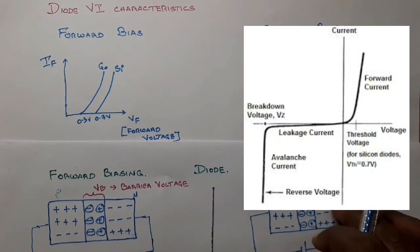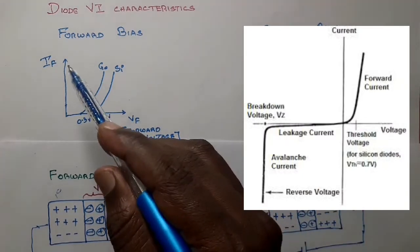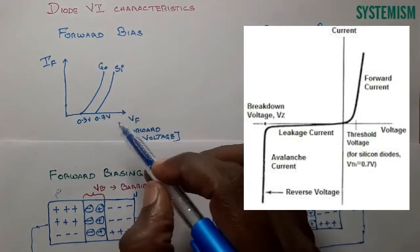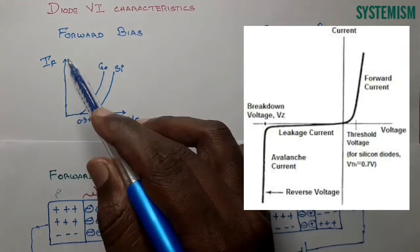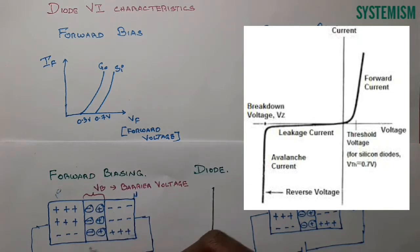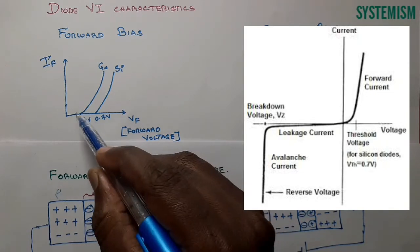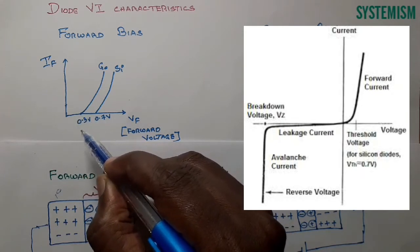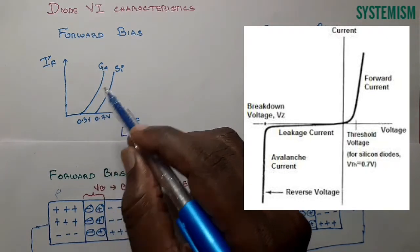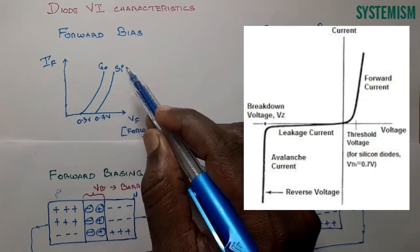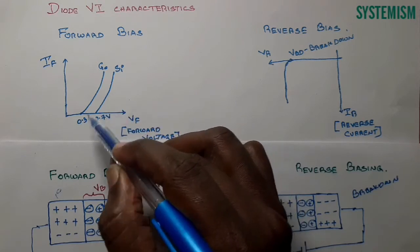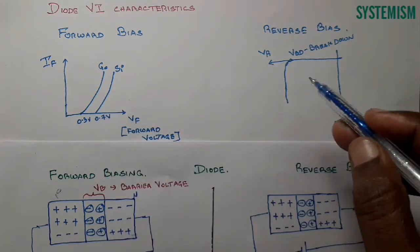Now we'll understand the V-I characteristics. On the graph, the X-axis is forward voltage and the Y-axis is forward current. As I increase the forward voltage, for a certain period no current flows. After the barrier potential is exceeded, current starts increasing gradually. The cut-in voltage for germanium is 0.3V and for silicon is 0.7V.